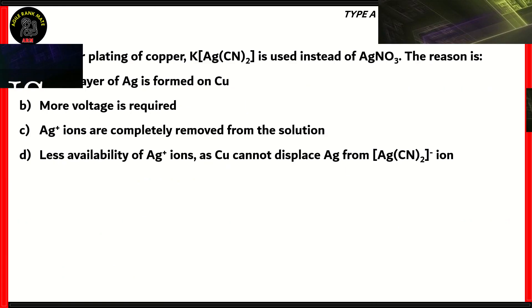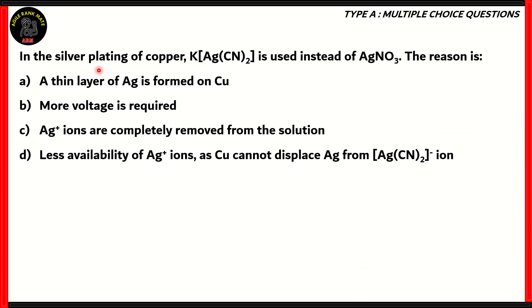Let's start off with our first question of the day. In the silver plating of copper, K[Ag(CN)2] is used instead of AgNO3. The reason is: (a) A thin layer of Ag is formed on Cu, (b) More voltage is required, (c) Ag+ ions are completely removed from the solution, (d) Less availability of Ag+ ions as Cu cannot displace Ag from [Ag(CN)2]- ion. So which of these is the correct answer?